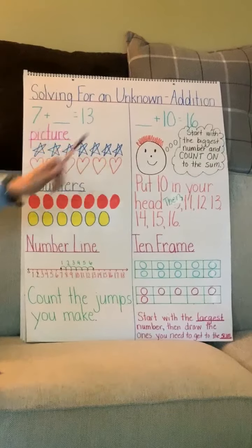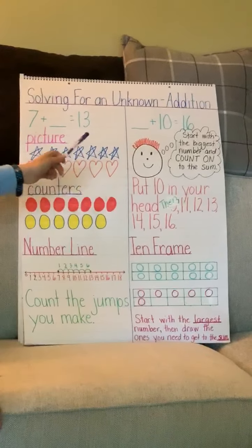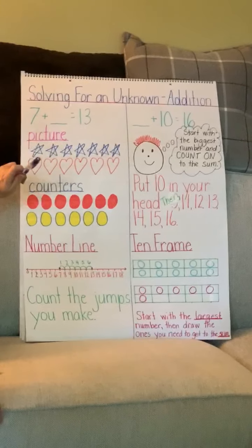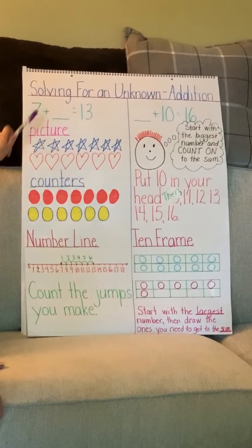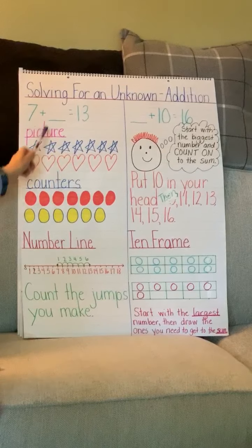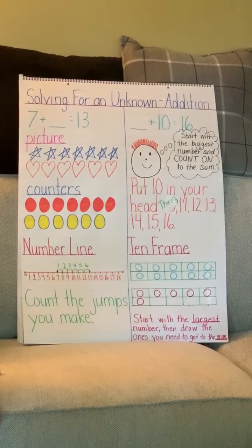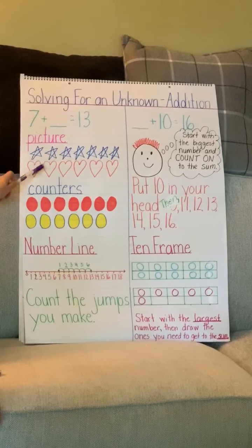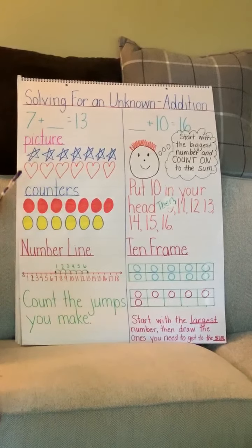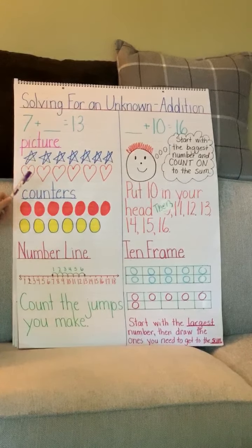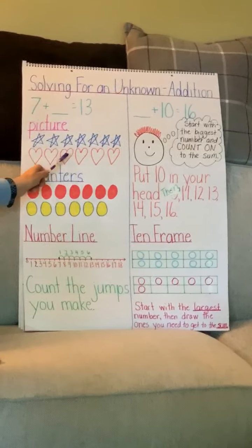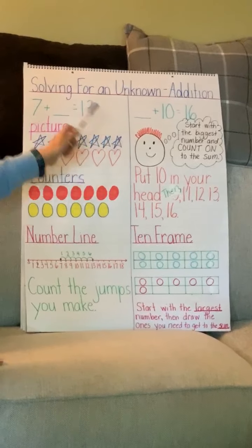We're going to talk about ways to solve this one. If you draw a picture, I could draw seven stars: 1, 2, 3, 4, 5, 6, 7, and then draw something else, but my sum or total needs to add up to 13. If I take the 7 and start counting on while doing my picture, we get up to the sum of 13: 7 in my head, 8, 9, 10, 11, 12, 13.